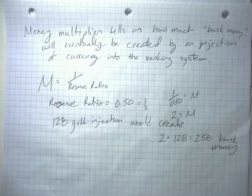And that's how I knew that my 128 gold injection would create 2 times 128 equals 256 bank money. That's how the bank money creation process works.